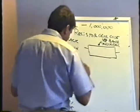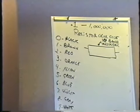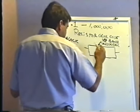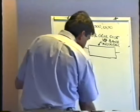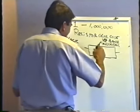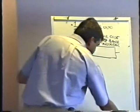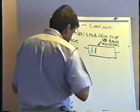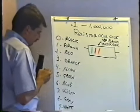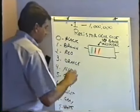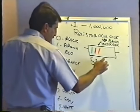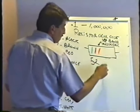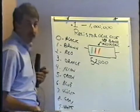Let's try some examples. Green, red, orange: green is 5, red is 2, orange means three zeros — so 52,000 ohms. Yellow, violet, yellow: yellow is 4, violet is 7, yellow means four zeros — 470,000 ohms. Don't try to do this in your head — it's very easy to lose a zero. Brown, black, yellow: brown is 1, black is 0, yellow means four zeros — 100,000 ohms. Just write it down carefully.